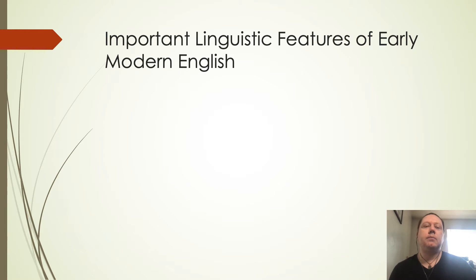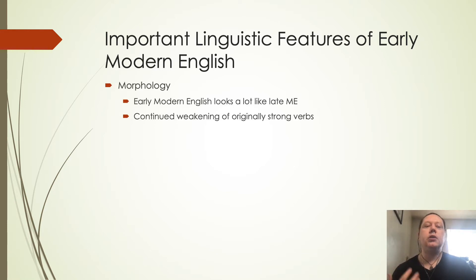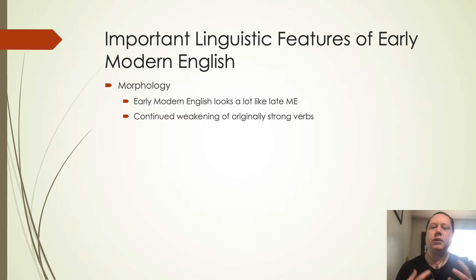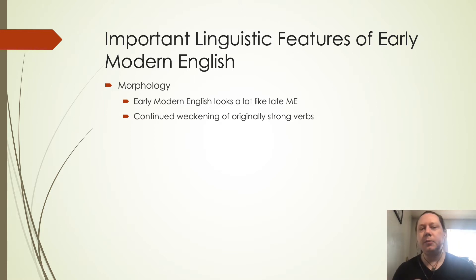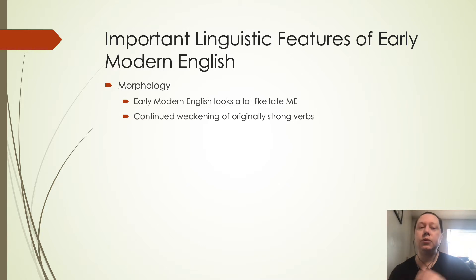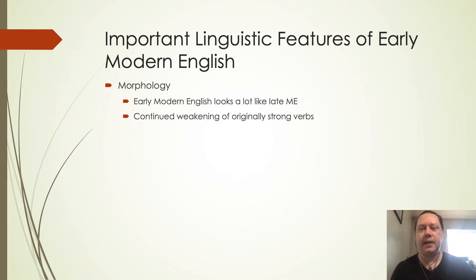Some of the most important linguistic features that we see during this time period, as we're moving from Middle English into something that's much more recognizable to us, is the morphology will start to look a lot like present-day English but still has a lot that's similar to late Middle English. So we'll see a transition period where some of it might still seem a little archaic but some of it will start looking a lot more similar to what we see today. There's a continued weakening of the strong verbs until we're left with pretty much all that we have left in present-day English.